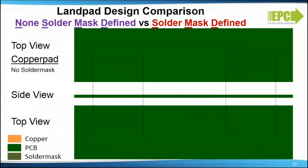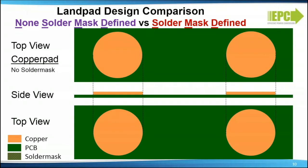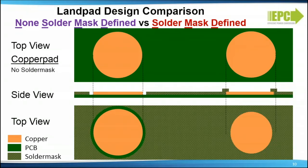Land pad design comparison: to best understand what a solder mass defined land pad looks like, we compare it to a traditional land pad. We start with a common copper pad for both designs, then add a solder mask layer. With a non-solder-mass-defined pad, the solder mask does not contact the outer perimeter of the copper pad, and the entire copper pad becomes the land pad. With a solder mass defined pad, the solder mask contacts and overlaps the outer perimeter of the copper pad, and the smaller remaining portion of the copper pad becomes the land pad.